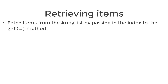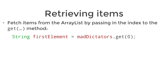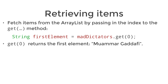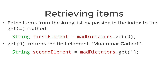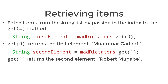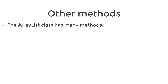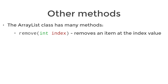Similar to the array, you're going to use an index to retrieve elements from the array list. So if you want to retrieve the first element and store it in a variable called firstElement, we use the array list name madDictators, the dot operator, and then the get method with the index of zero for the first element. The array list class also has a remove method which takes an index value as an argument and removes the item at that index from the array list.